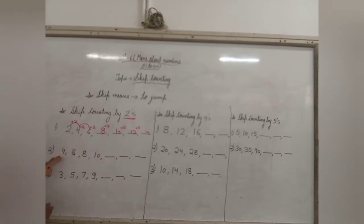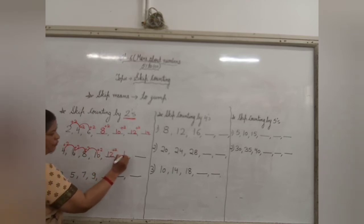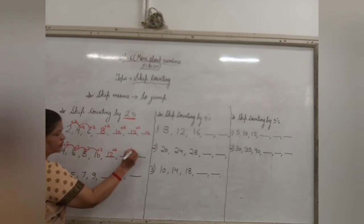Next one, 4. See, from 4 you have jumped to 6, means you have add 2. 4 plus 2 will be 6. 6 plus 2 will be 8. 8 plus 2 will be 10. Now children, 10 plus 2, 12. 12 plus 2, 14. 14 plus 2, 16. Clear?